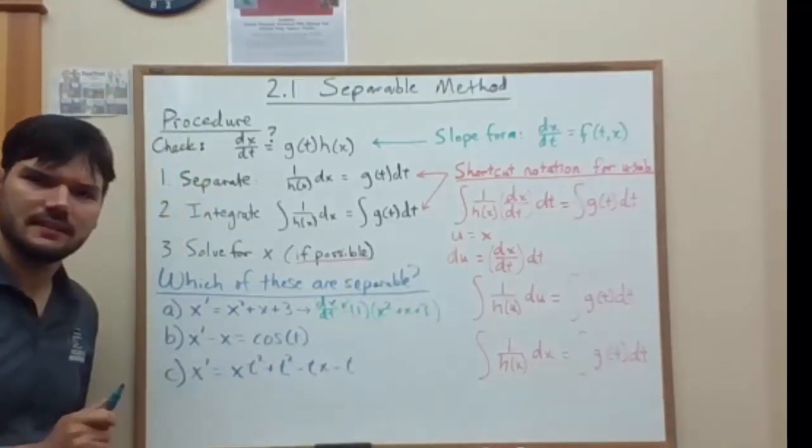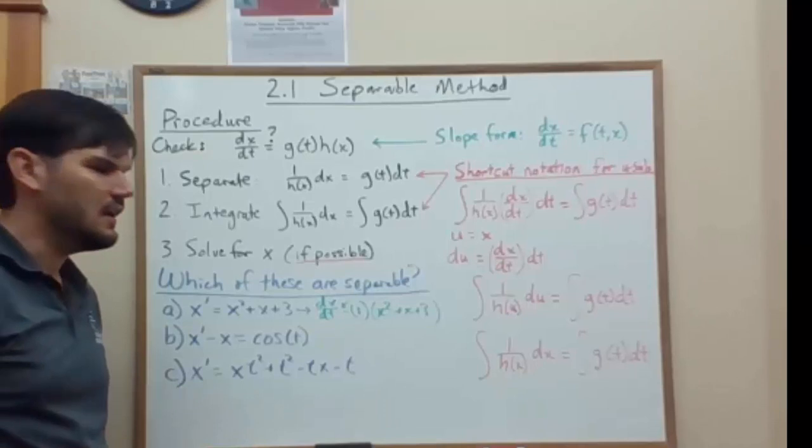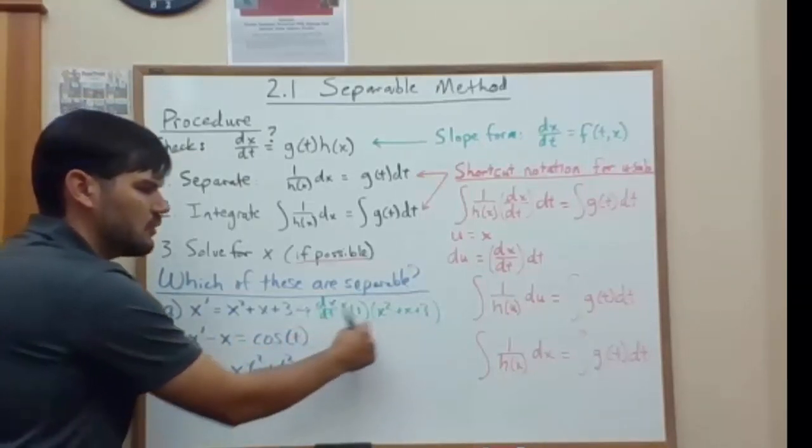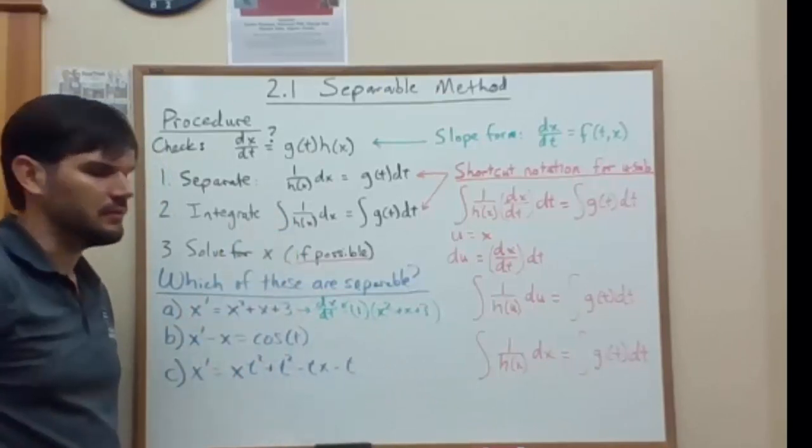Check. That is separable. And you would integrate it, or you'd separate it by moving that chunk on the bottom, multiplying dt on the other side, and integrating through.